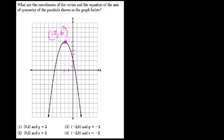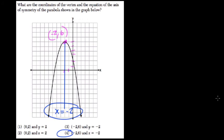The axis of symmetry is a vertical line that cuts your parabola in half right here, and that's the line x equals negative 2. So we have the point negative 2, 6, and the axis of symmetry x equals negative 2. Choice 4.